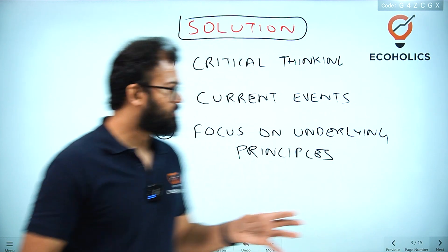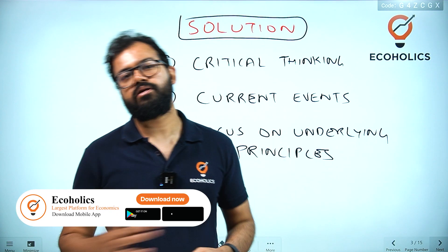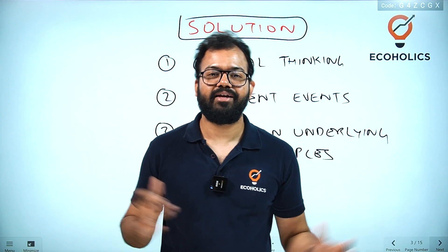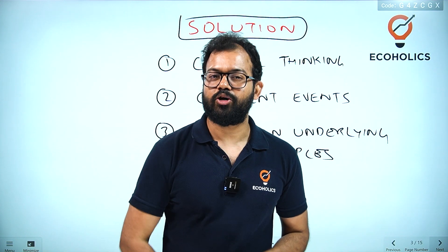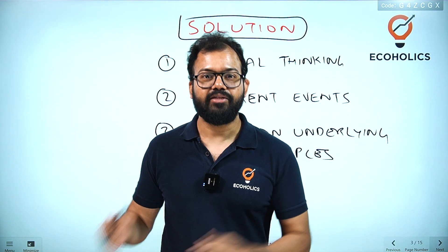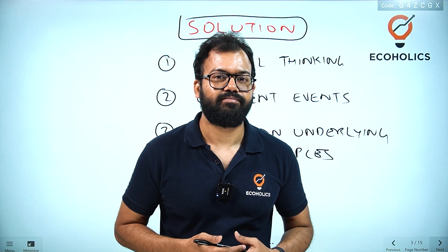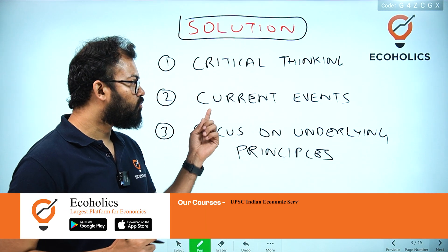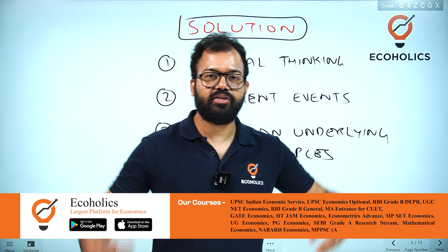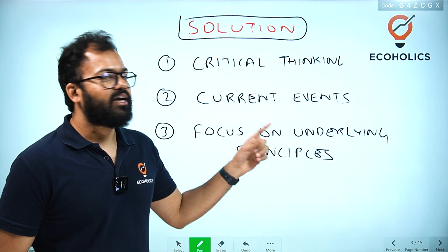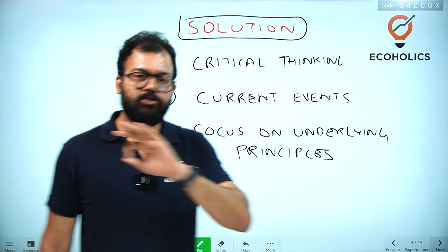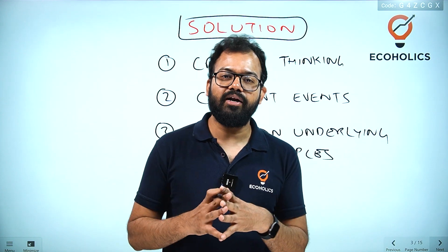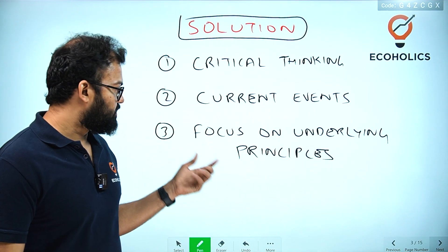You have to question and critically think. The next solution is connecting to current events. When you see any economics-related model and do not connect it with current events, you miss the point. The world economy faced the 1929 Great Depression, then the 2008 Global Financial Crisis — a similar thing happened but on a different platform in a different sector. It is very vital to study events like the Asian Financial Crisis or India's balance of payments crisis in 1990. If you do not connect those events with current aspects, you will not be able to understand those models, because models are based on real life incidents.